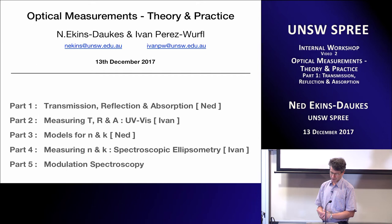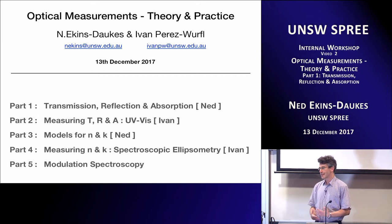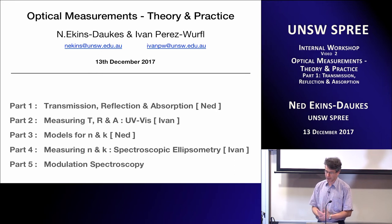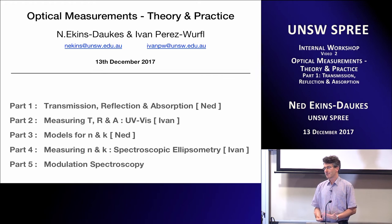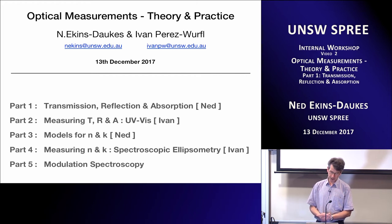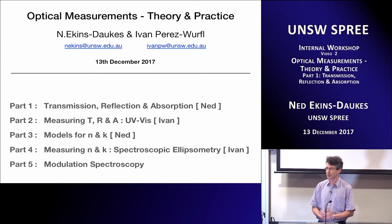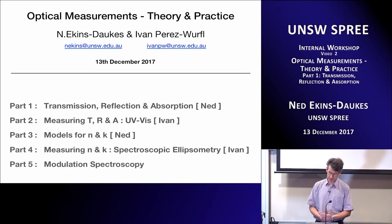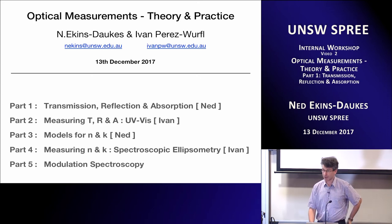Part one of the presentation is transmission, reflection, and absorption — sounds very simple, but we already end up in quite a lot of complexity even with those measurements. Ivan will then take you through how we actually make those measurements, particularly using the UV-Vis spectrometer. Then I will come back with models for N and K — the real and imaginary parts of the refractive index — and show why that can be useful. Ivan will then discuss how to determine N and K using spectroscopic ellipsometry. Finally, I'll make a last appearance in part five to talk about modulation spectroscopy, which brings a lot of what we're discussing to a conclusion.